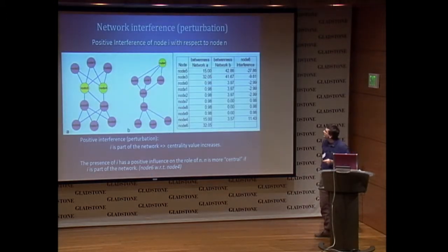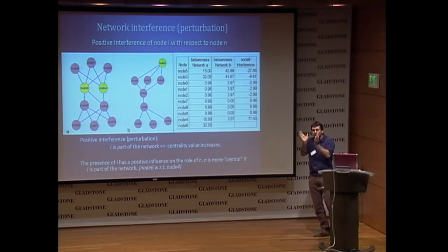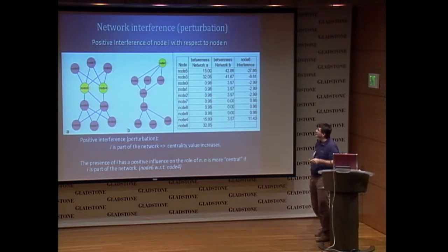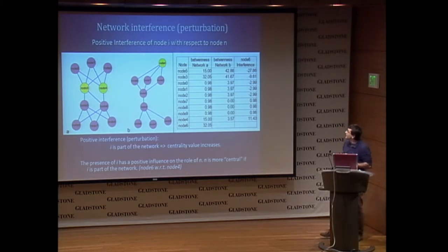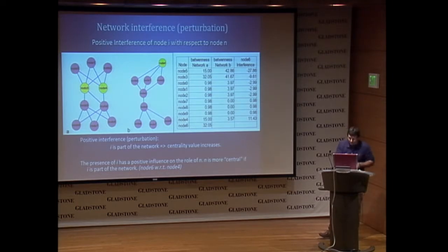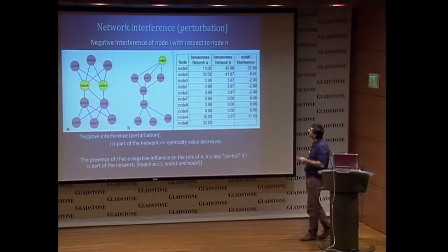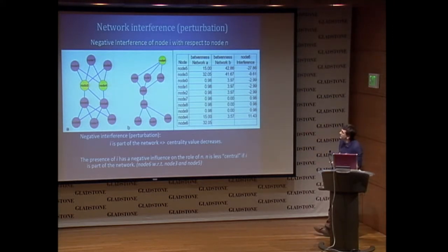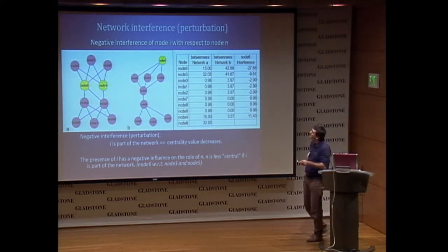Now imagine you have a protein network and an important protein that connects several proteins, and you inhibit it — the proteins have to choose another way to maintain their functionality. So positive interference is when the node is important: node 6 has positive interference with respect to node 4. If node 6 is part of the network, node 4 is important. Negative interference is a negative value — if node 6 is in the network, it has negative interference with node 3 and node 5, because they are less important.